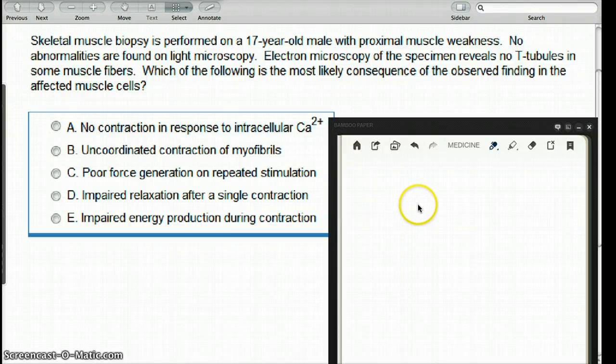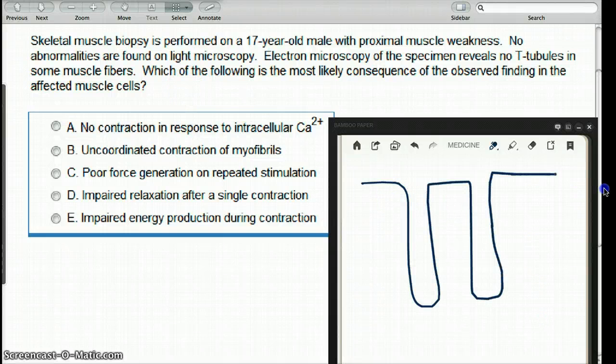In this question, it says a muscle biopsy is performed on an old male with proximal muscle abnormalities. No abnormalities are found on light microscopy, but on electron microscopy of the specimen, there are no T-tubules in some muscle fibers. Which of the following is most likely a consequence of this observed finding in the affected muscle cells?